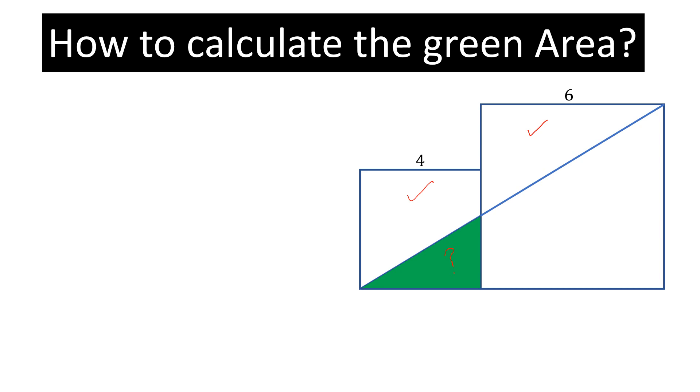The first small square, look at this figure. This is 4, so this will be also 4. In the big square, this will be 6 and this will be also 6.